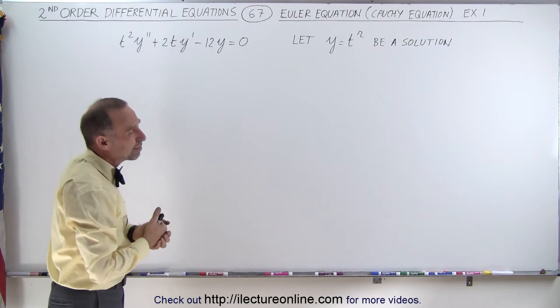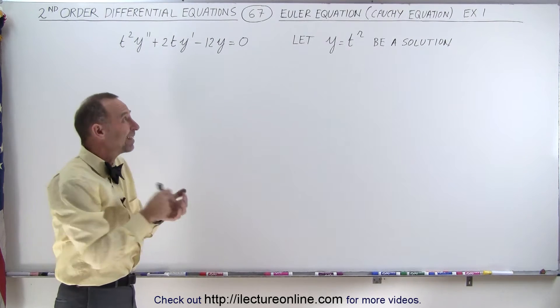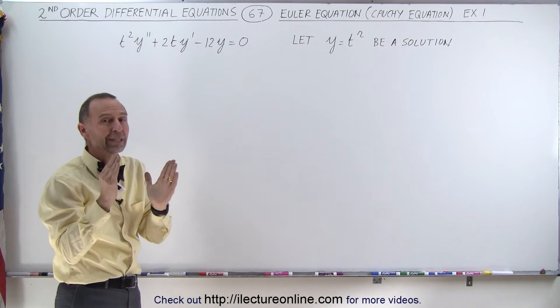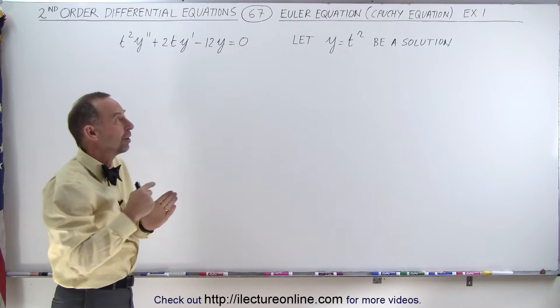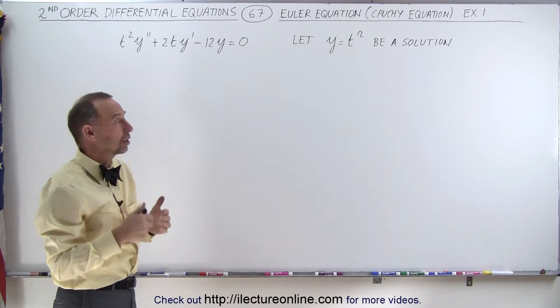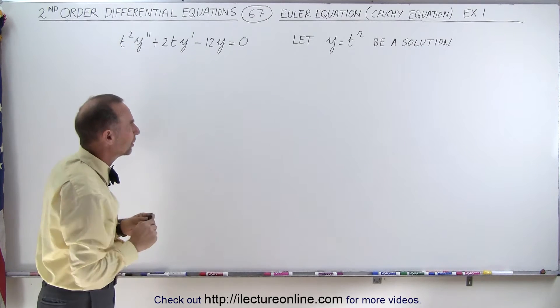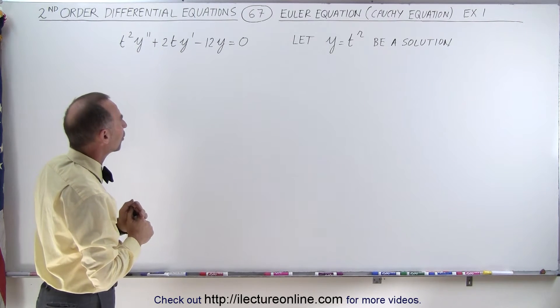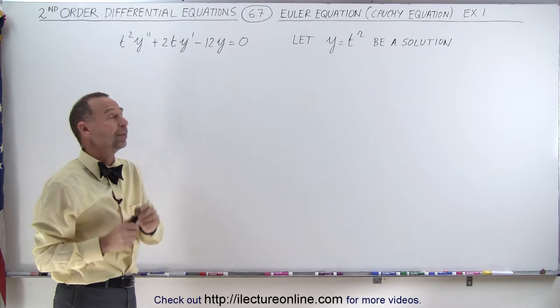Well, r can be less than zero as well, but if it's less than zero, we need to make sure we take the absolute value sign of it when we have the natural log in our solution. You'll see that in just a moment. I believe that this may have some negative r solutions as well.